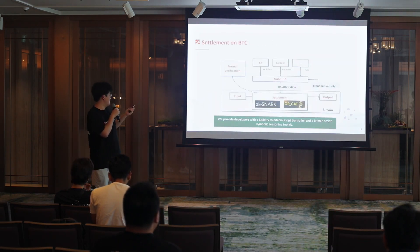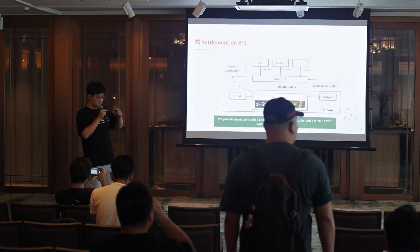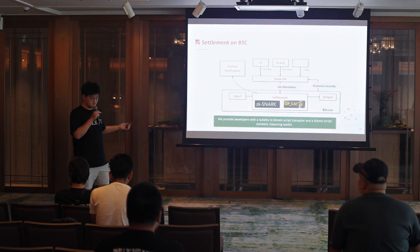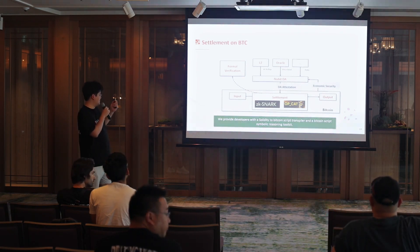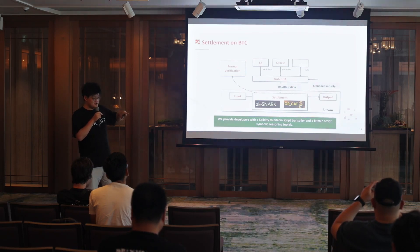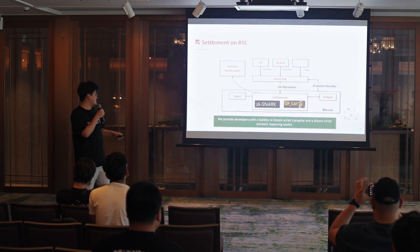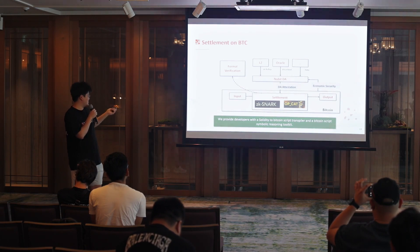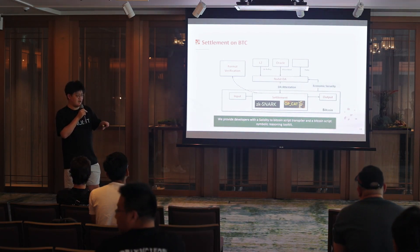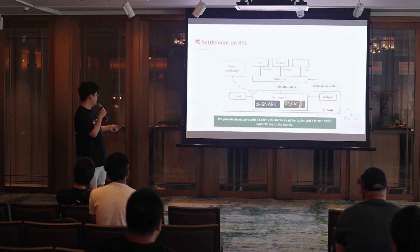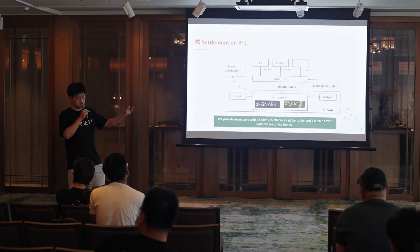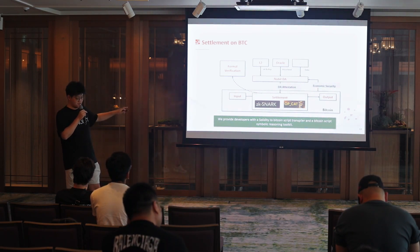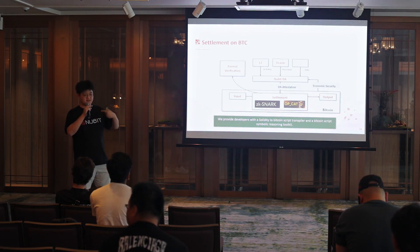The second component is settlement on Bitcoin. There are many layer 2s and mini-chains that want to do settlement on Bitcoin. Thanks to amazing teams such as Chakra and BitcoinOS, we can achieve this goal very soon. Before we do settlement on Bitcoin, we want to ensure the security of that settlement. We developed in-house formal verification tools — coming from a security background — that can formally verify Bitcoin scripts with respect to a specification. Based on that, we can transform Solidity code to Bitcoin script and directly deploy ZK-verified contracts on Bitcoin, so that layer 2s and applications can directly verify DA proofs and state proofs on Bitcoin.